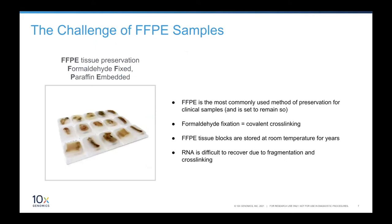The first thing I want to talk about is FFPE — probably the top customer request after Visium launched: can we run Visium with formalin-fixed paraffin-embedded samples? These are the standard method of preservation for clinical samples and the majority of what ends up in biobanks — millions of samples a year — that contain very valuable material. Previously, Visium was only compatible with fresh frozen sections. The problem with FFPE is that during fixation and embedding, everything gets crosslinked, RNA gets sequestered away, and over time as blocks are stored at room temperature, RNA degrades, making it very difficult to use in NGS assays.